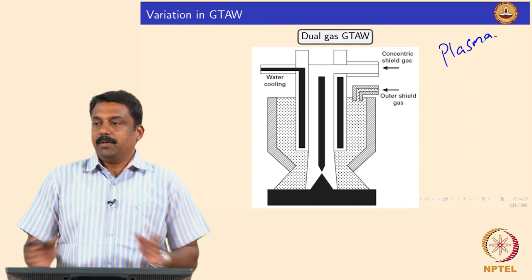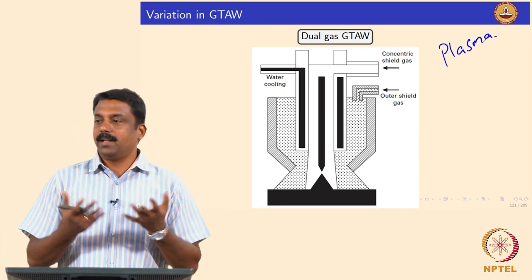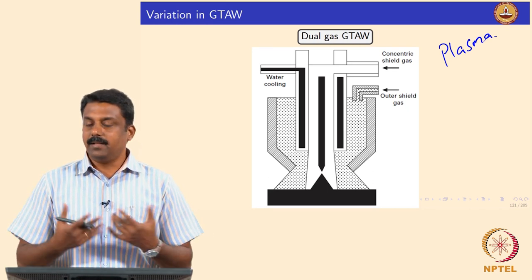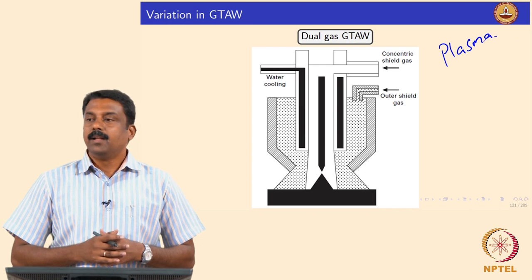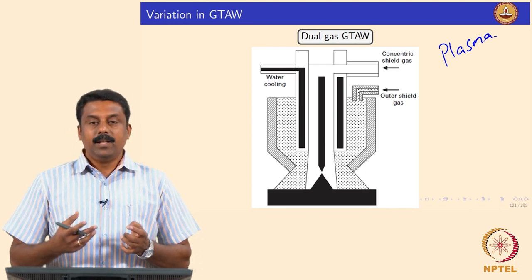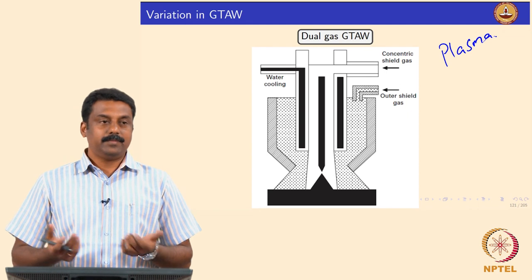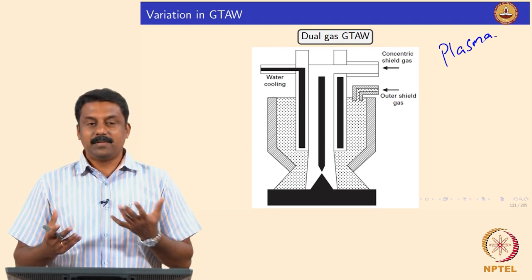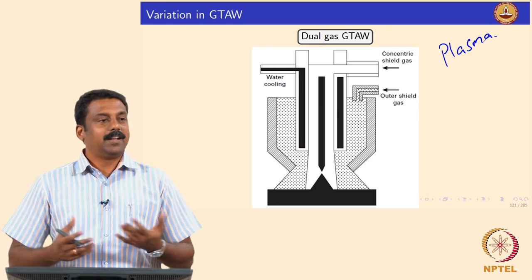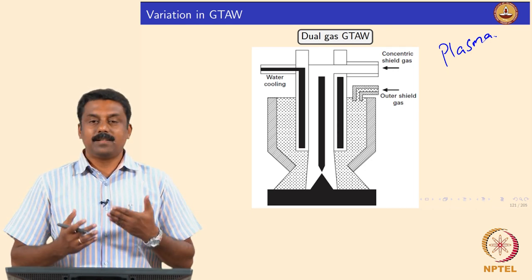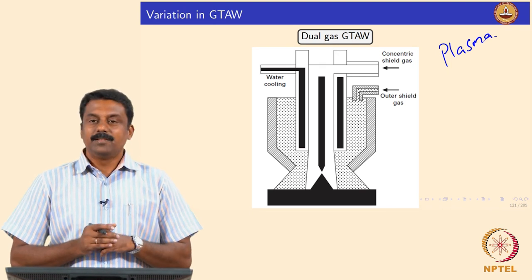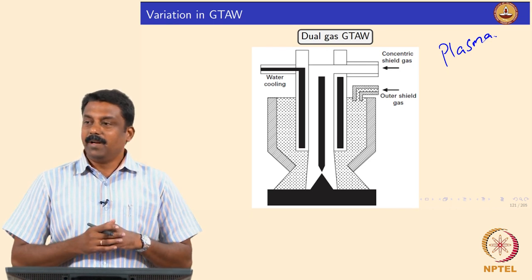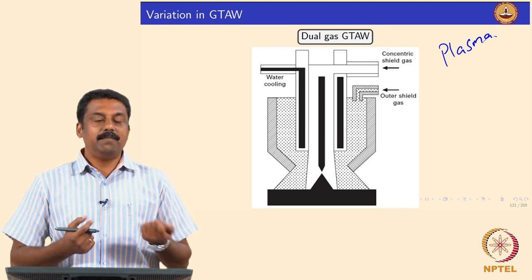One way of doing it is to increase the current, keep increasing it to a maximum level. But that is disadvantageous because then you will also increase the heat input. The other way is to carefully manipulate the heat transfer characteristics of the arc. Heat transfer in arc is carried out by three ways: conduction, convection, and radiation. Conduction and radiation we cannot modify, but we can manipulate the convective heat transfer.